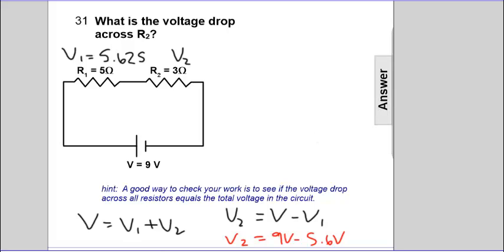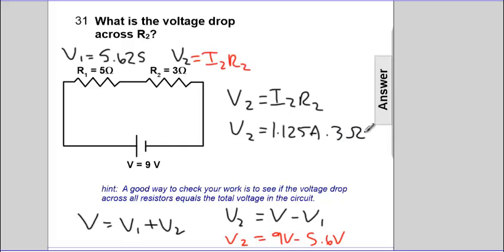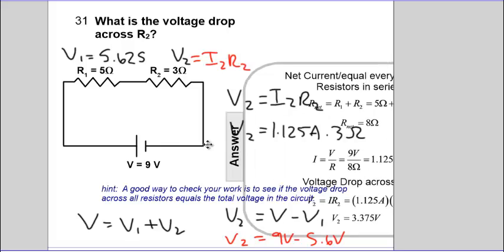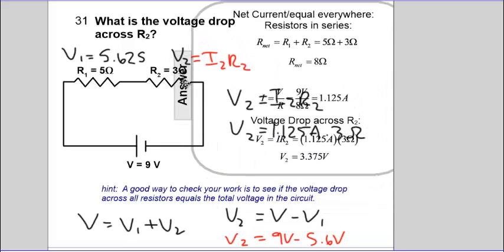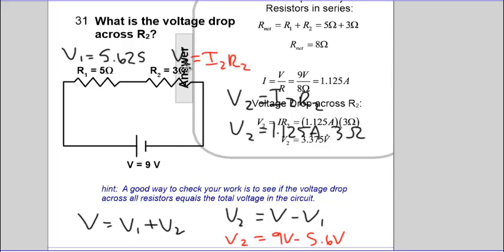Let's use an alternate solution. Finding V2, that would be I2 times R2. V2 is I2 times R2. V2 is 1.125 amps times what R2 is, which is 3 ohms. And when we take the product of these two, the current times the resistance, we'll get 3.375 volts.